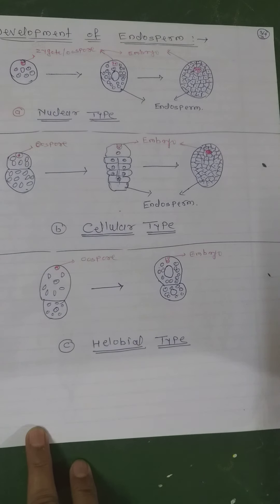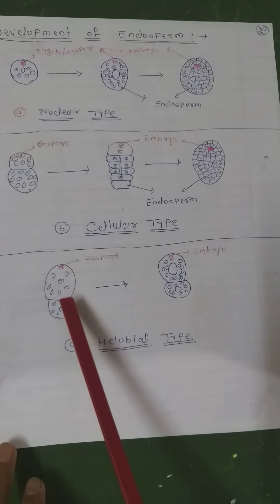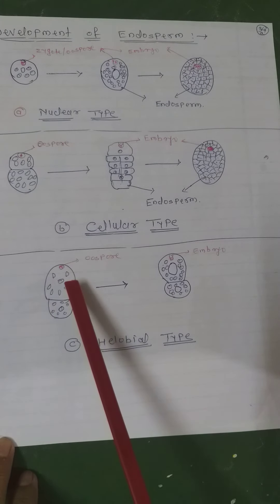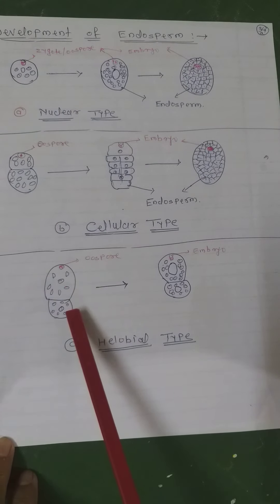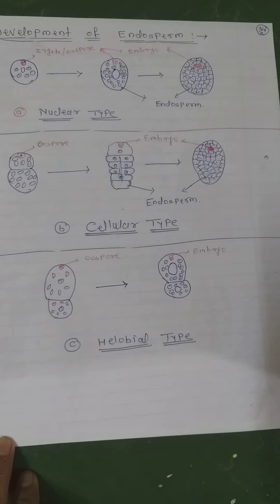Examples of cellular type endosperm development include balsam, petunia, and Adoxa. In helobial type, the first division of the primary endosperm nucleus is followed by a transverse wall which divides the cell unequally — producing a larger cell called the micropylar cell and a smaller cell called the chalazal cell.